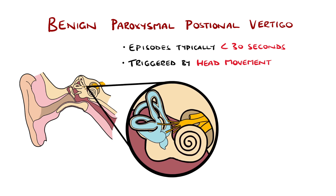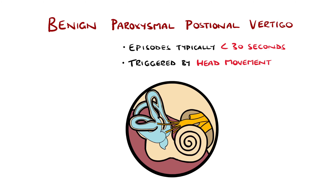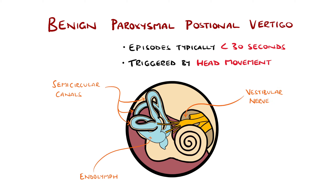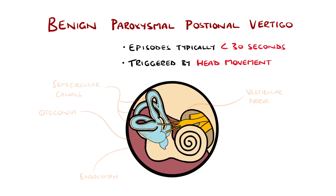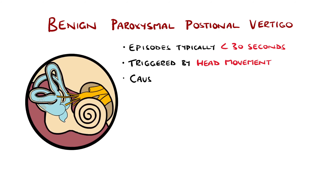Normally, the semicircular canals convey information on the position of the head in space, as the fluid called endolymph within them moves and stimulates or inhibits small hair-like sensors, depending on the direction of movement. These then send the proprioceptive information to the cerebellum via the vestibular nerve. In BPPV, symptoms occur due to small crystals called otoconia being present within the vestibular semicircular canals, most commonly the posterior one. Presence of these otoconia can stimulate the hair cells without the head actually moving, leading to vertigo.